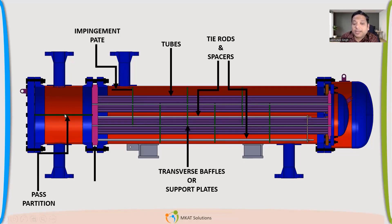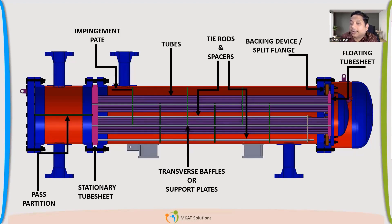This is the pass partition plate. Stationary tube sheet. And the other side is floating tube sheet. Now this is called backing device or split flange. Because this flange is in two parts. We'll talk about the detail of this also, in the later sections. But right now, just remember the nomenclature. Here we are just talking about the nomenclature. We will be doing all the dimensioning. What dimension we should have. Everything we'll talk about in the next sections.